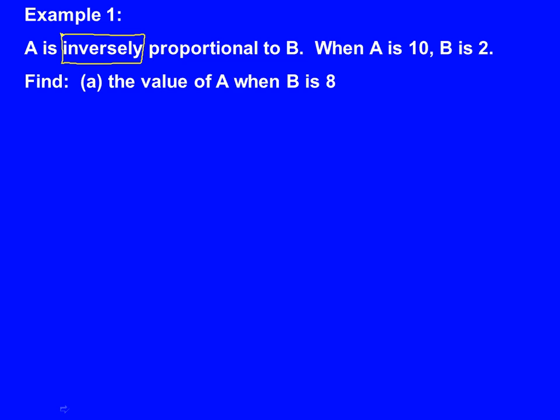In the previous MathsCast on Proportion, we learned that when it says A is directly proportional to B, we would write A is proportional to B. That's wrong in this case because the word inversely tells us that this time it will be A is proportional to 1 over B.